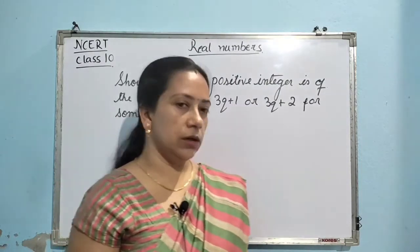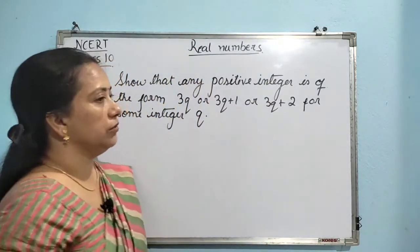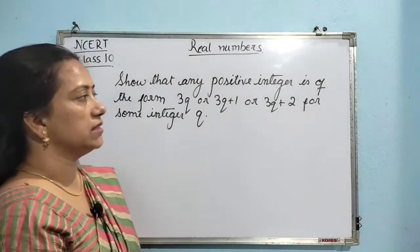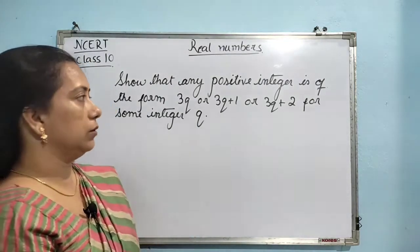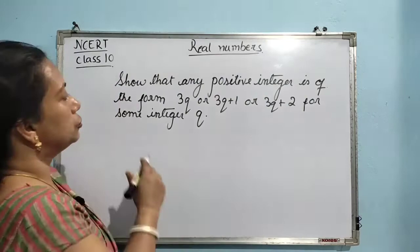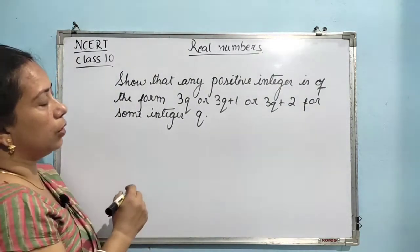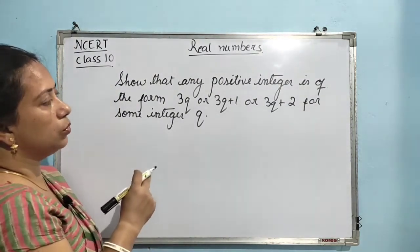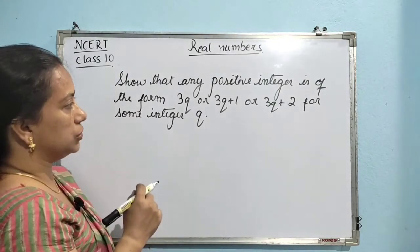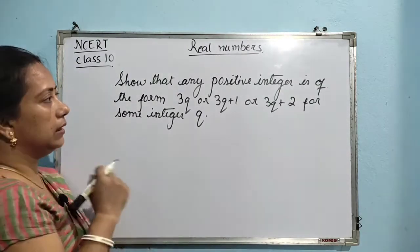Dear students, today in this video I will be doing a few questions on the application of Euclid's division lemma. The first question is: show that any positive integer is of the form 3Q, or 3Q plus 1, or 3Q plus 2 for some integer Q.